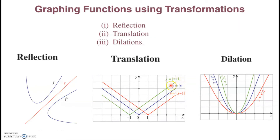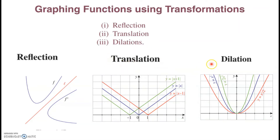The blue is the original function f(x) = |x|. The green one is |x+1|, which has shifted to the left. Similarly, |x−1| has shifted to the right. Interestingly, adding 1 shifts it to the left, and subtracting 1 shifts it to the right. This is translation.